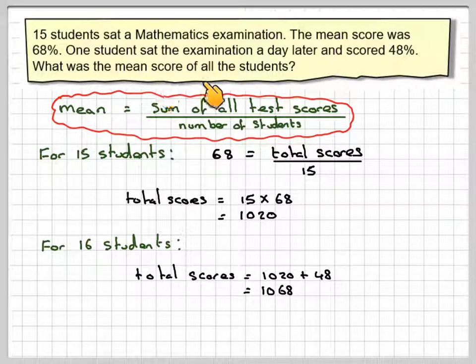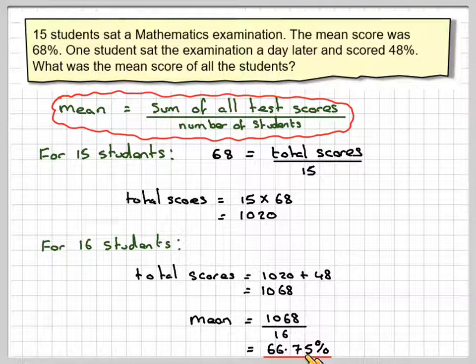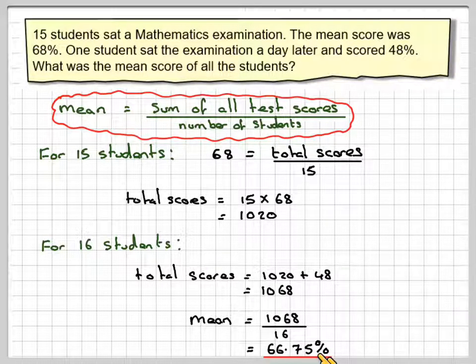And the question says, what's then the mean score of all the students? So the mean score will be the sum of the test scores divided by the number of students, which is now 16, which is going to be 66.75%.